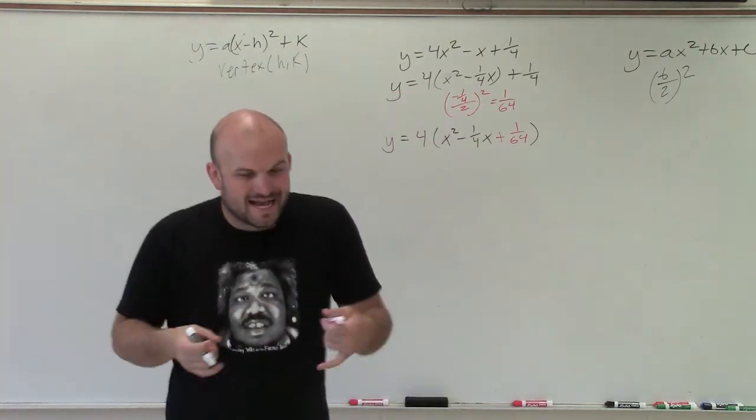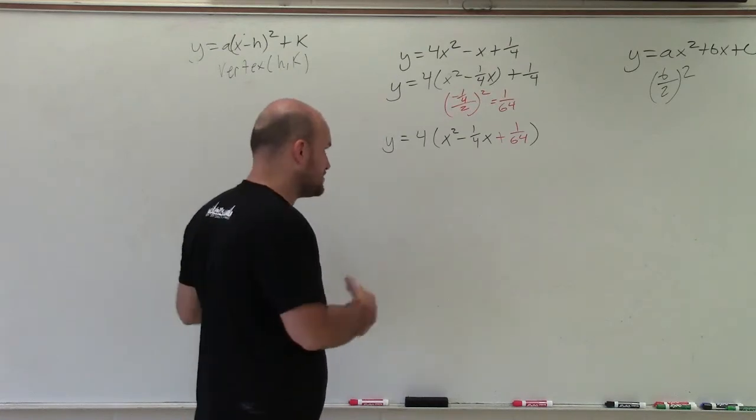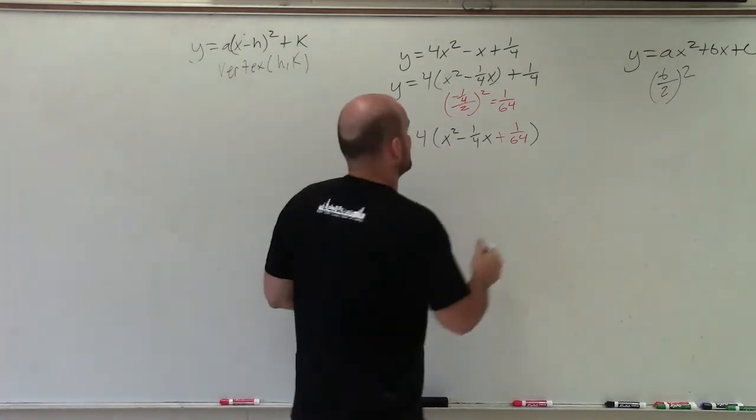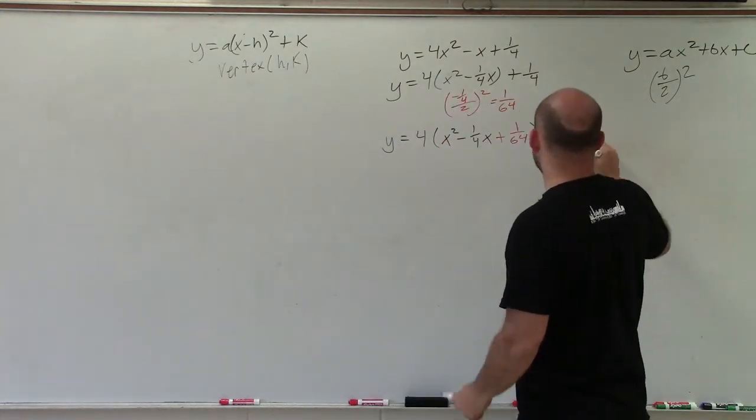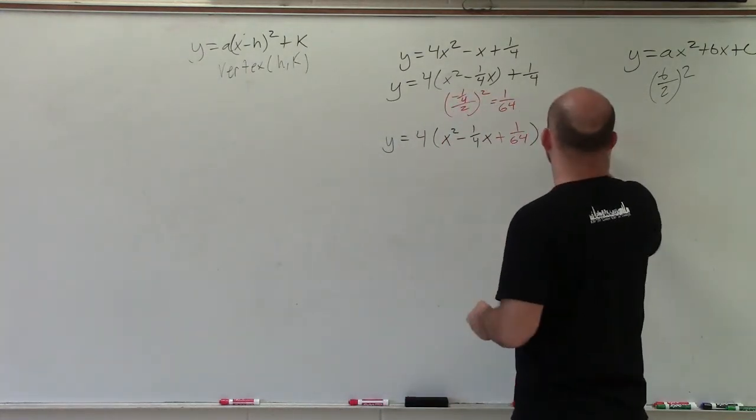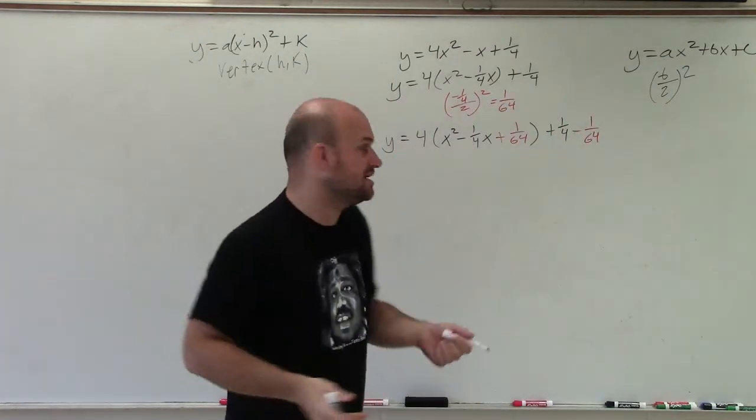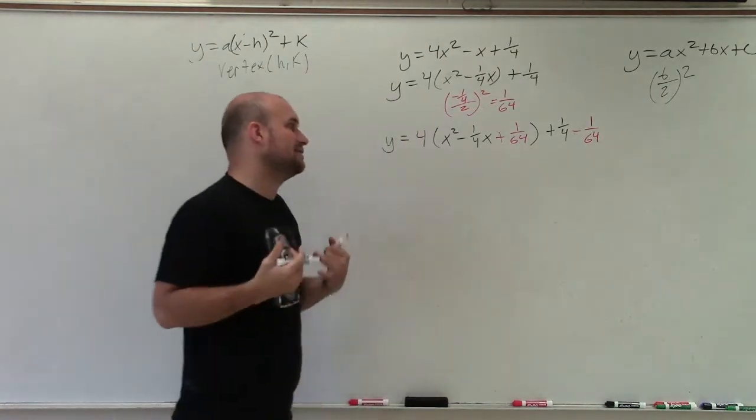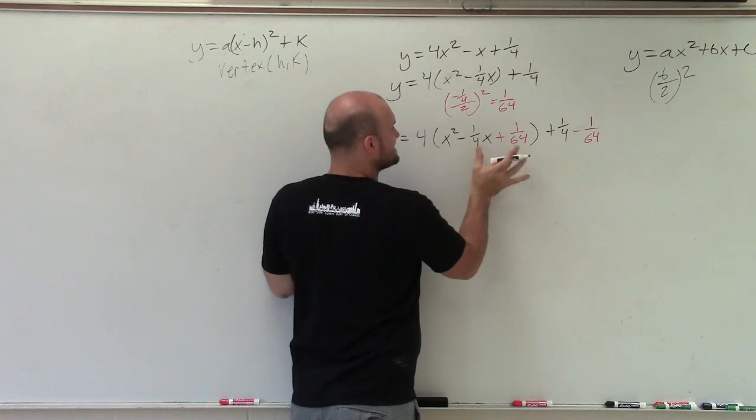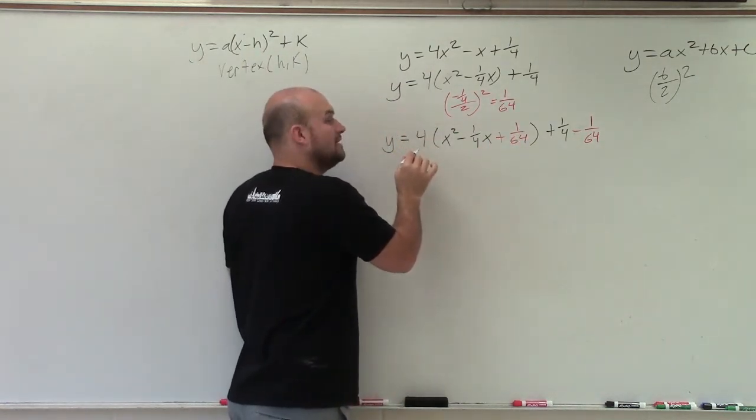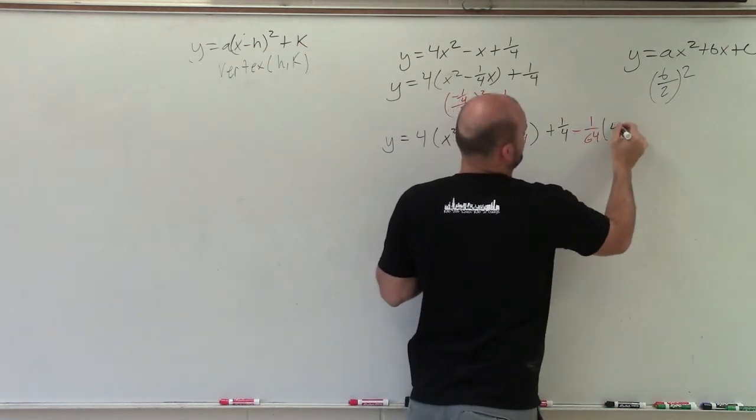Now since I'm adding it on one side of the equation I have to make sure I add and subtract on the same side. So I need to subtract 1 over 64, but we have another issue because look, you have 1 over 64 inside the parentheses being multiplied by 4. So therefore I need to multiply by 4 over here.